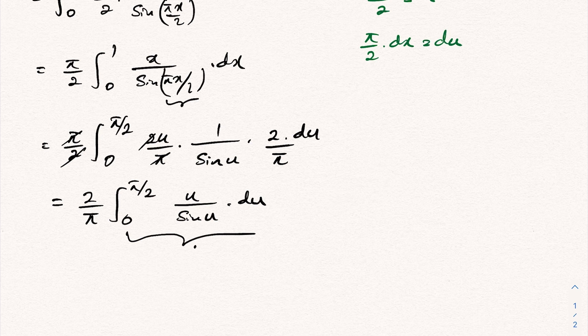This integral was solved in the previous video and we know the answer is 2G, where G is Catalan's constant. So we have (2/pi) times 2G, which gives us 4G/pi. This is the answer for this integral. Thank you for watching.